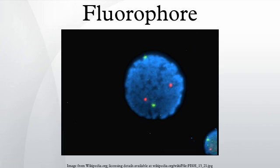Fluorescent proteins — GFP, YFP, and RFP — can be attached to other specific proteins to form a fusion protein, synthesized in cells after transfection of a suitable plasmid carrier.